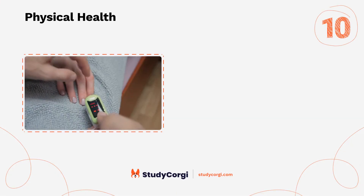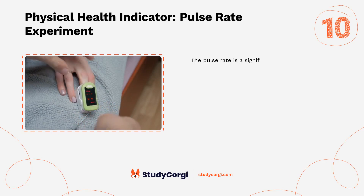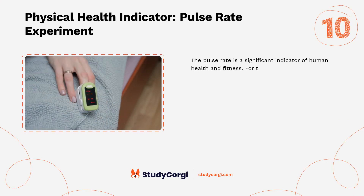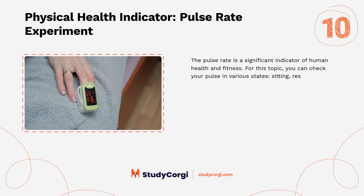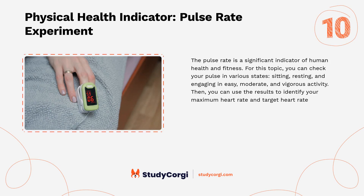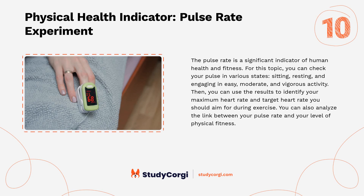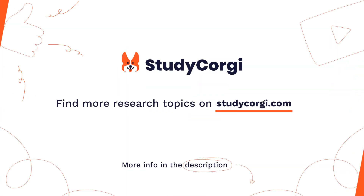Physical health indicator — pulse rate experiment: the pulse rate is a significant indicator of human health and fitness. For this topic, you can check your pulse in various states: sitting, resting, and engaging in easy, moderate, and vigorous activity. You can then use the results to identify your maximum heart rate and target heart rate you should aim for during exercise. You can also analyze the link between your pulse rate and your level of physical fitness.